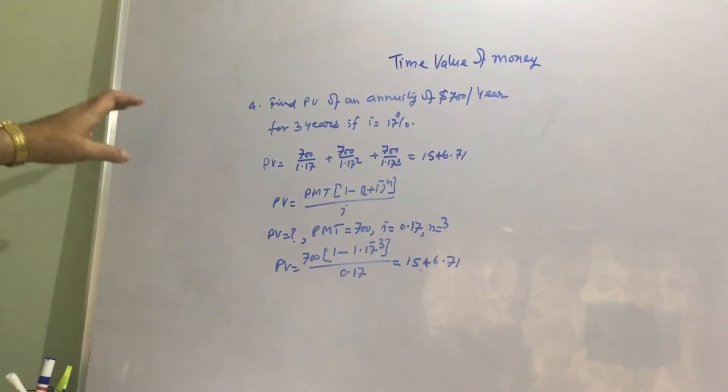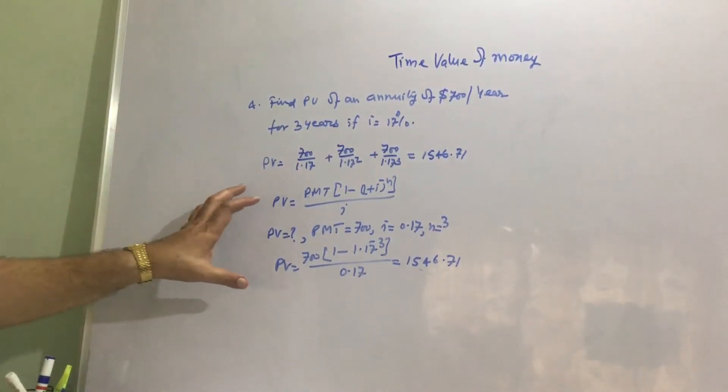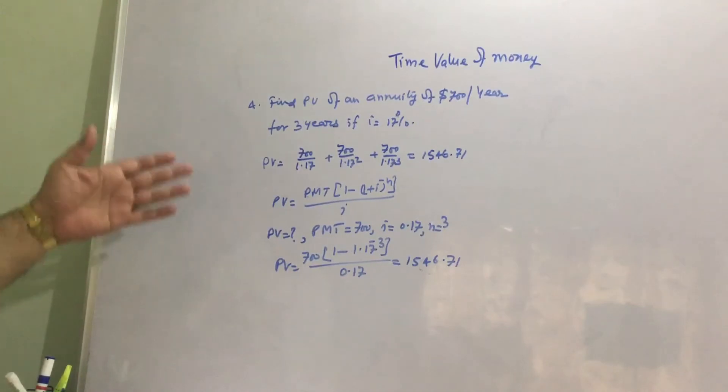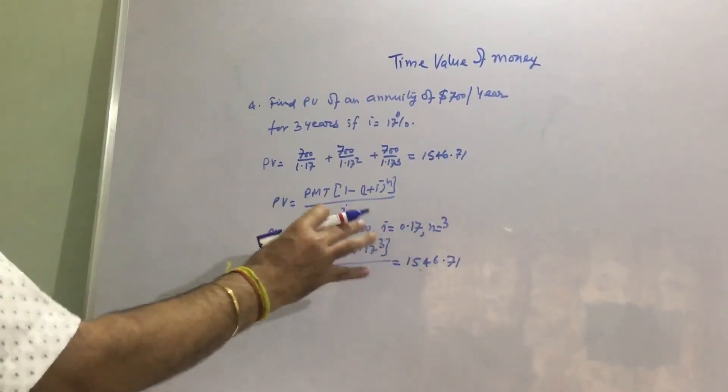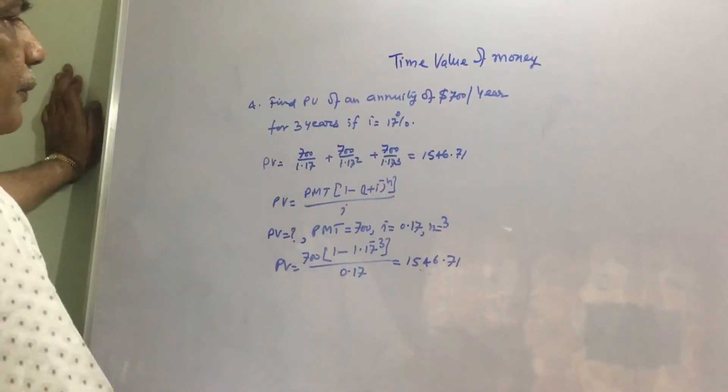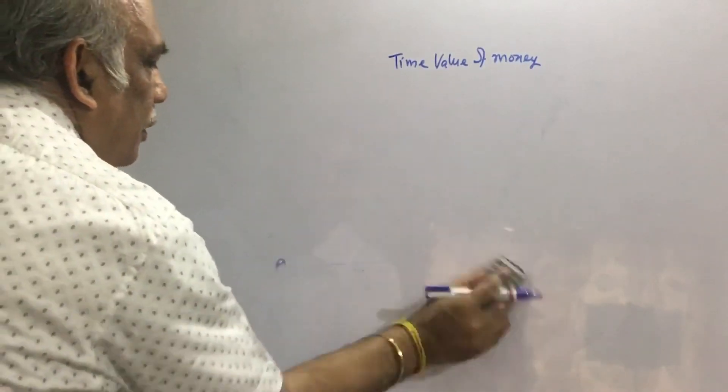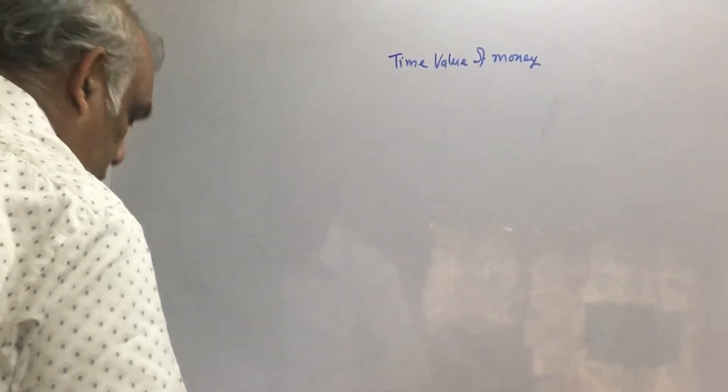So dear friends, if number of years or number of periods is less, say up to 5, we can find out the present value using the direct method. If this number of periods goes beyond 5 or so, then we should use the formula only because it becomes easy. Using the direct method, sometimes there will be so many terms the calculation will take a lot of time. So this formula is already used if the number of periods goes beyond 5.